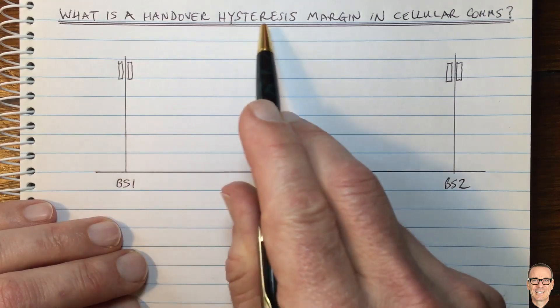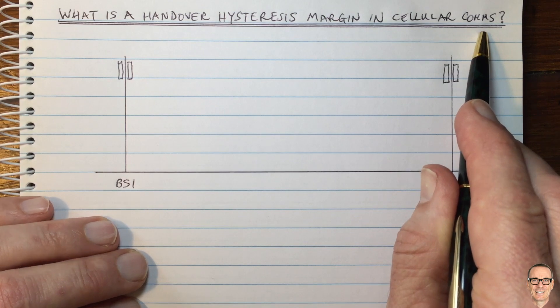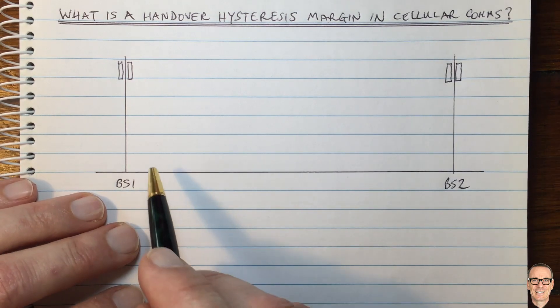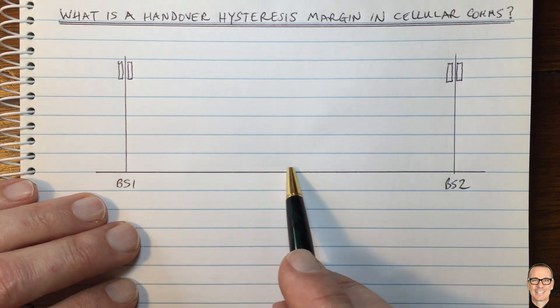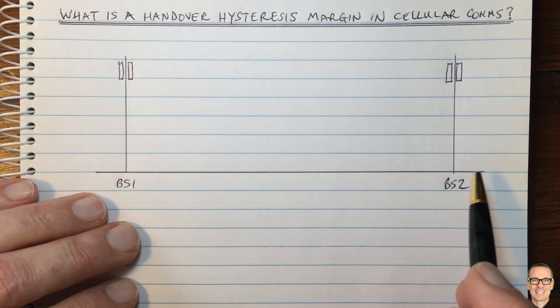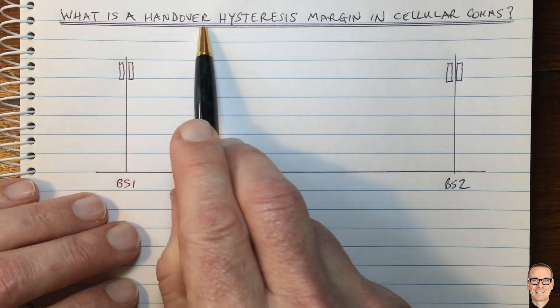What is a handover hysteresis margin in cellular communications? Well, of course, if you're a mobile terminal and you're connected to a base station, then at some point you'll move away from that base station and you'll start moving closer to another base station. And that's what we call handover.